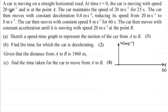We're told that at time t equals zero, the car is moving with a speed of 20 meters per second and is at point A. The car maintains the speed of 20 meters per second for 25 seconds, so we have a horizontal line at that speed. I'm also going to drop a dotted line straight down to the horizontal axis, and that will be at 25 seconds.